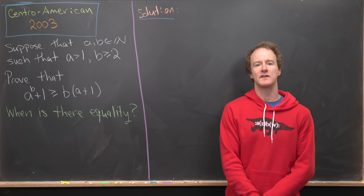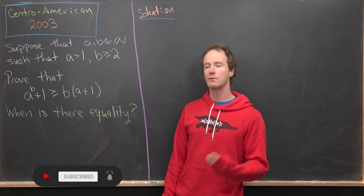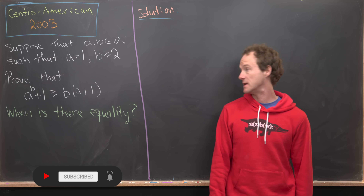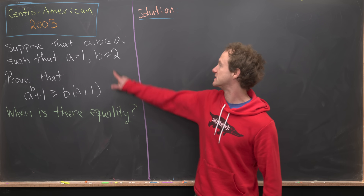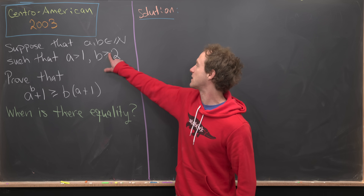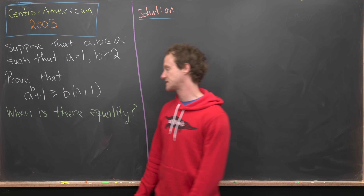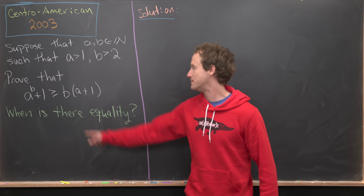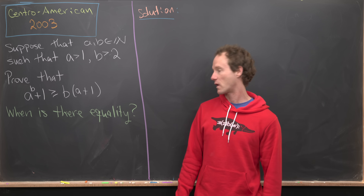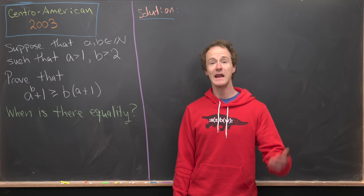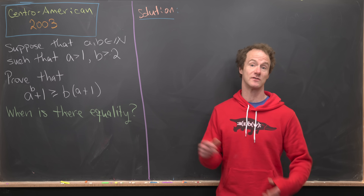Here we're going to look at a nice inequality that was found on the 2003 edition of the Centro-American Math Olympiad. We want to take two natural numbers A and B satisfying the rule that A is bigger than or equal to two and B is bigger than or equal to three, and we want to prove that A to the B plus one is bigger than or equal to B times the quantity A plus one. As is standard with these inequality questions, we want to determine when there is equality. I'm going to present an edited solution to make it a little slicker.